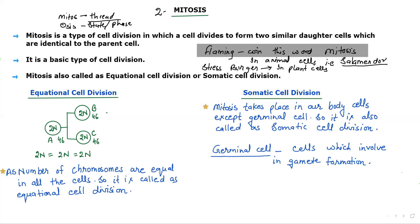Generally, mitosis is going to occur in eukaryotic cells which are multicellular. In all such organisms, all the body cells will generally undergo mitosis, and that is very helpful for the growth of the organism. In unicellular organisms, mitosis is responsible for the division of the cell. Mitosis is also essential for the wear and tear of the cell — whenever cells get older, they are replaced by new cells formed through mitosis.